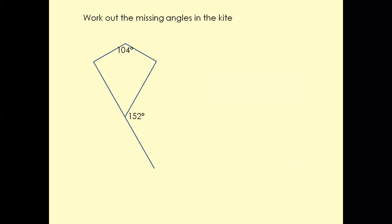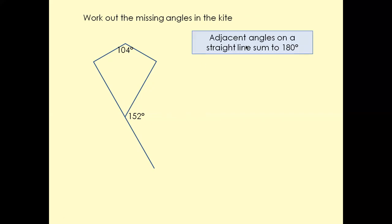Have a look at this question — pause the video and give it a go. In this case we're talking about a kite, and a kite is a special type of quadrilateral. All four angles in a quadrilateral add up to 360. It's easy to find this angle because that's a straight line, and angles on a straight line add up to 180 degrees. So this angle is 180 take away 152, which gives us 28 degrees.